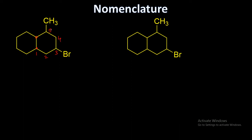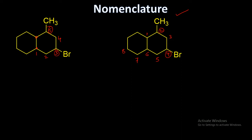Going in an anti-clockwise way, the bromo and methyl substituents will get numbers three and five. If I start numbering from the fused carbon, it will be two, three, four — so they get numbers two and four. The other direction gives three and five, so obviously this numbering — two and four — is preferred.